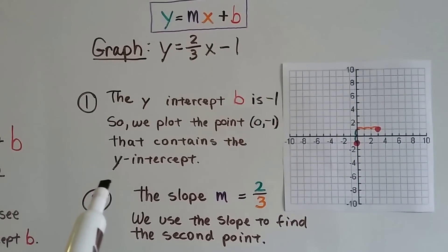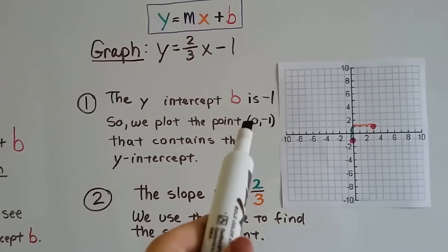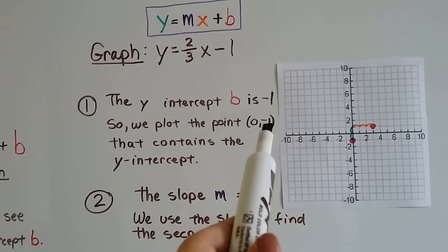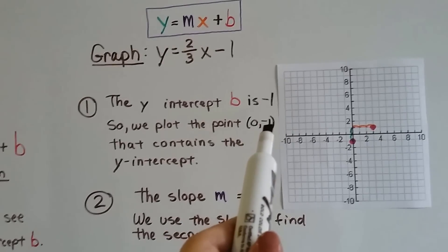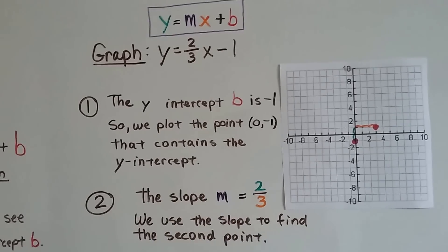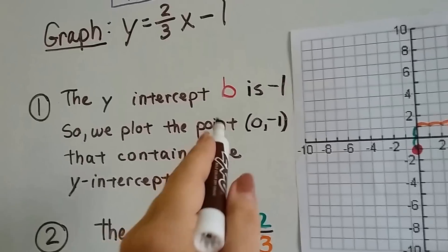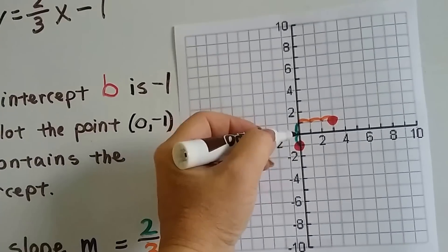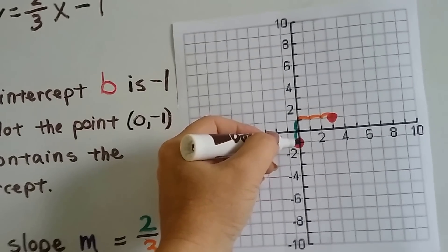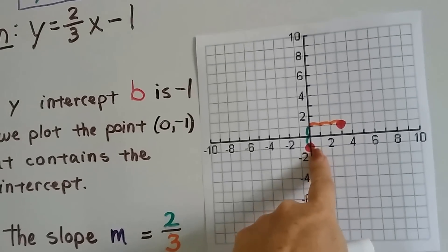So the y-intercept b is negative 1, and we plot the point 0 for x and negative 1 for where the line is going to hit the y-axis. That contains the y-intercept. So what we do is, it's negative 1, so we go on the y-axis, and we find negative 1, and it's right here. So we draw that point.